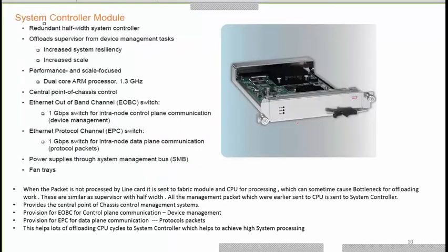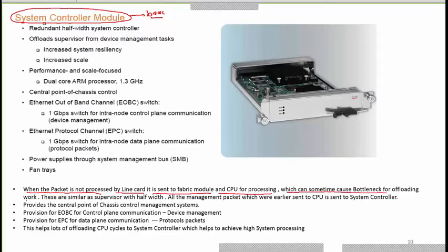To reduce CPU load, Nexus 9k introduced the system controller module, inserted on the back side of the chassis. When a packet is not processed by the line card it is normally sent to the fabric module and CPU, which can cause a bottleneck. The system controller is similar to a supervisor but half-width, and all management packets that were previously sent to the CPU are now sent to the system controller instead.